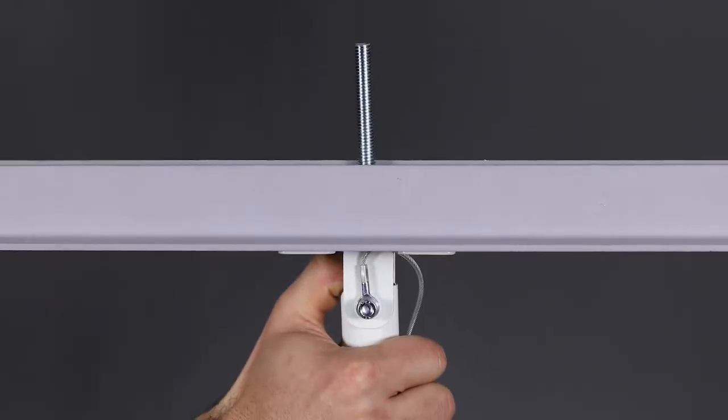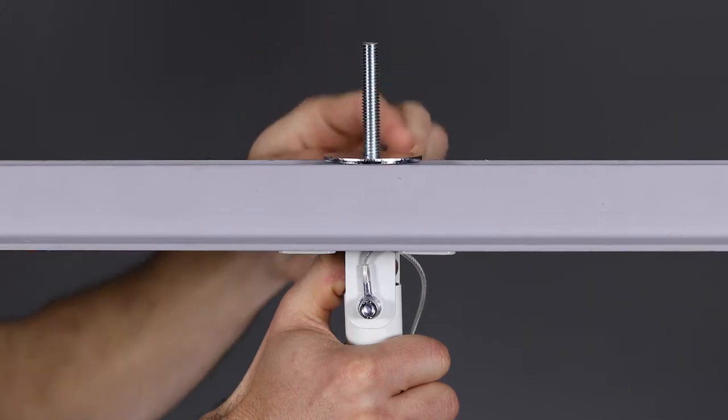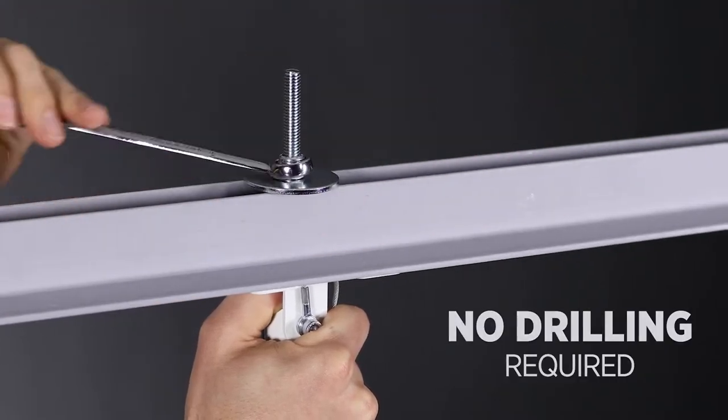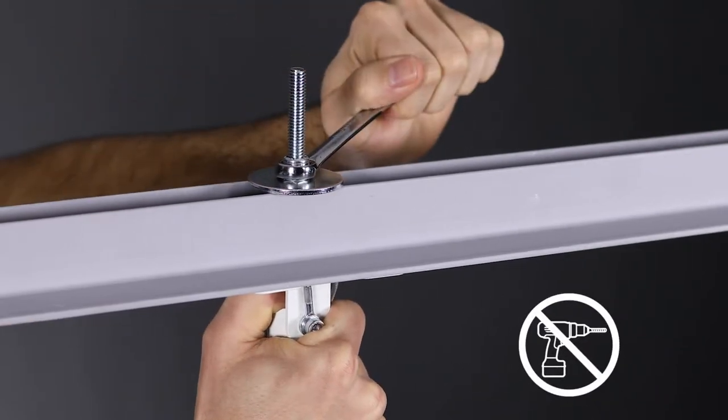To install, simply guide the bolt through the opening of the truss and secure with the included locking nut. With our single bolt design, there's no need for drilling into the truss structure.